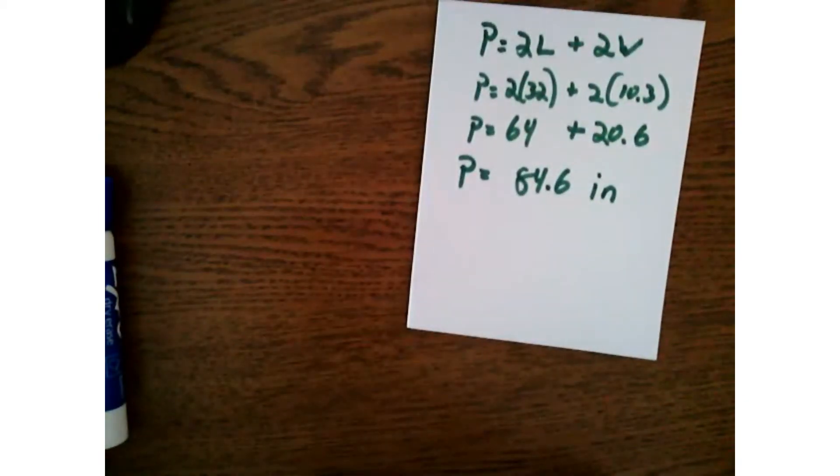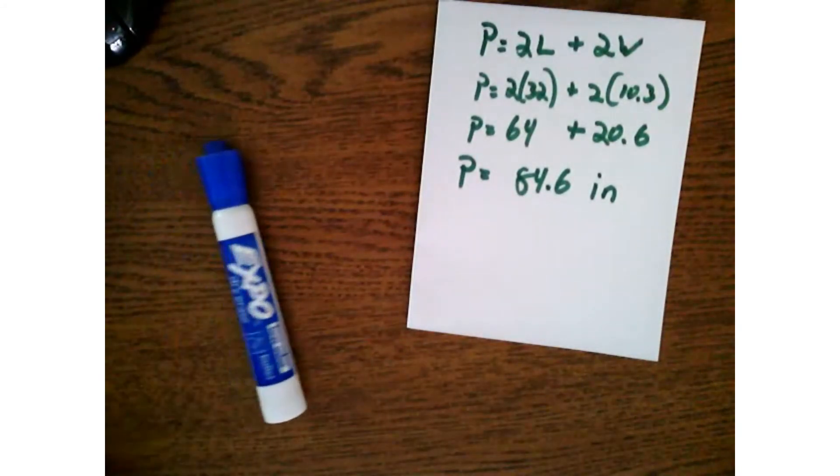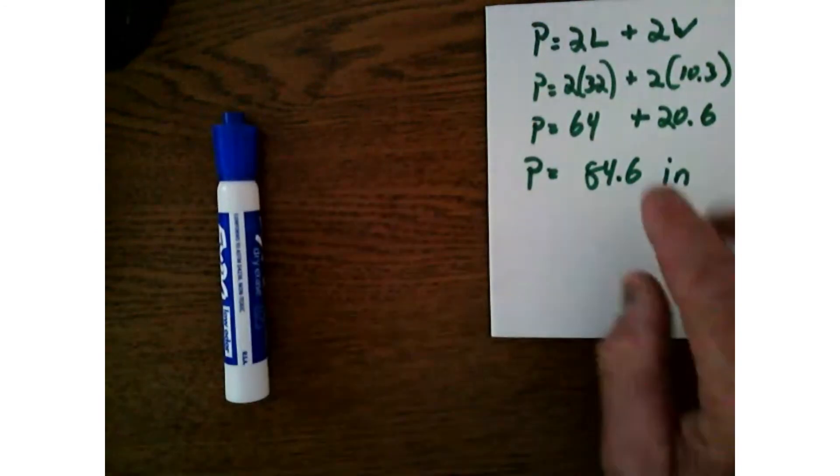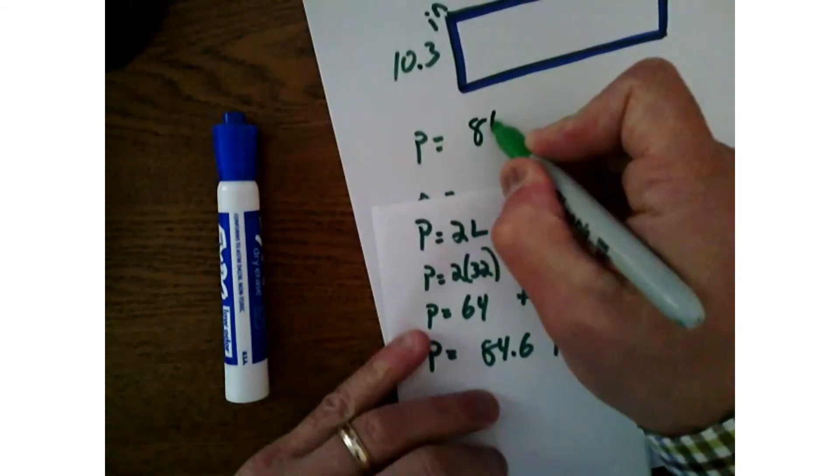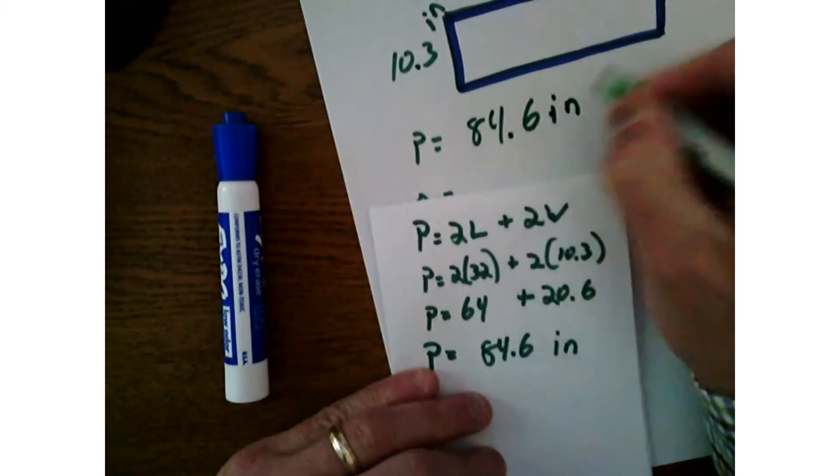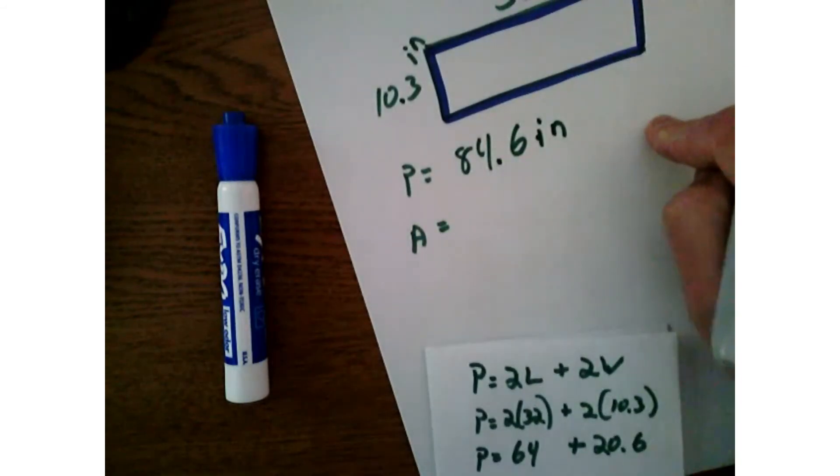I almost forgot the last most important part. Take the work that you did, go back to your homework, and put that answer, 84 and six tenths inches, on your homework. So now you've got perimeter all set.